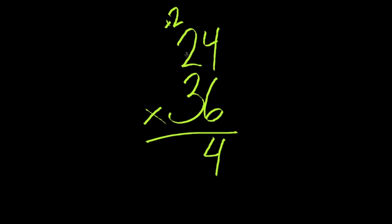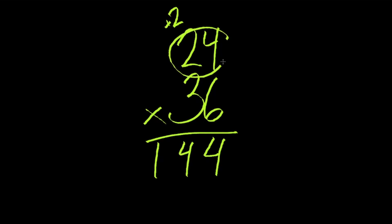Six times two — this two right here is the next step — six times two plus this two up here. Six times two is 12, plus two is 14. Now, if I had another number here, I'd add my one up there. But since I don't, I can put it down in the answer right here. So six times 24 is 144. Now with this three, here's my one new step, since I have a second digit.